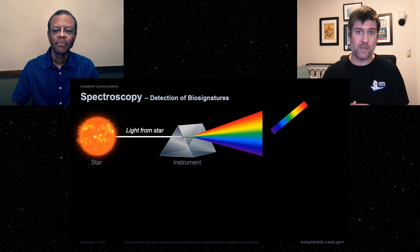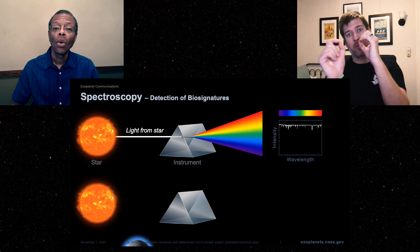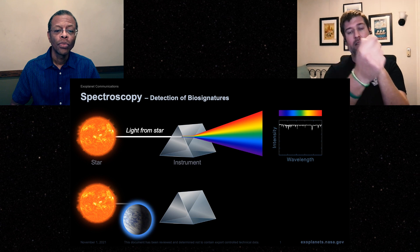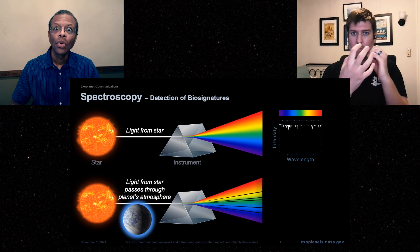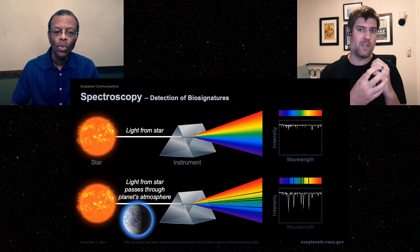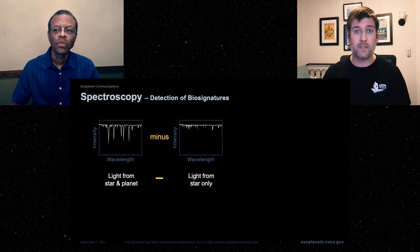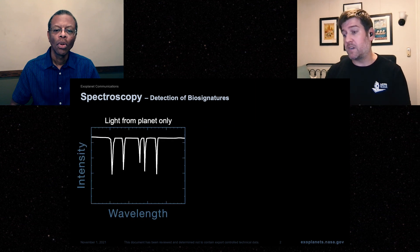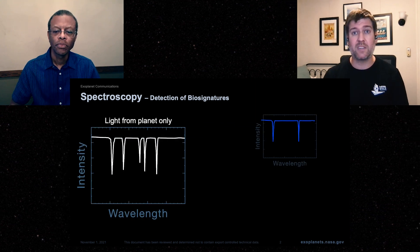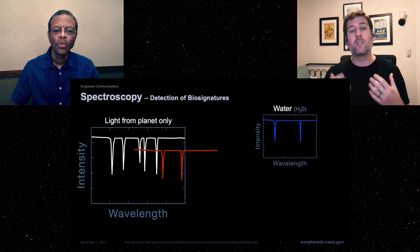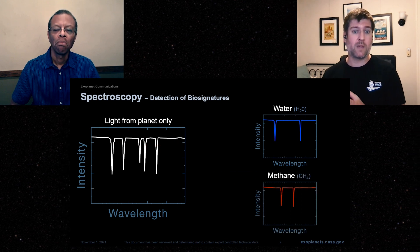But it also importantly allows us to study the atmosphere of an exoplanet. We can actually look at how, when the planet passes in front of the star, we can analyze how the atmosphere blocks out and absorbs some of the star's light. And from that we can actually infer the molecules that are in that planet's atmosphere, or you know, what sort of temperature it might have in its atmosphere as well. So you can actually learn a lot from the transit method.